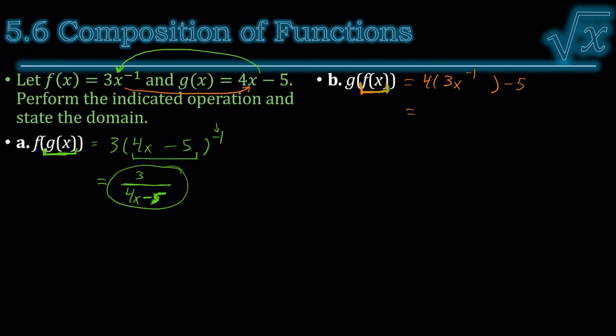Well, we can multiply. The 4 times the 3 is 12. x to the negative 1 minus 5. And the negative exponent means reciprocal. But that's only on the x. So the x goes to the bottom. So it's 12 over x minus 5.